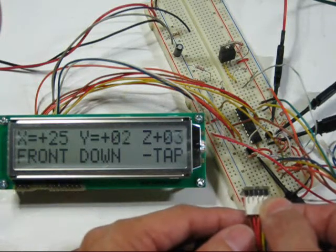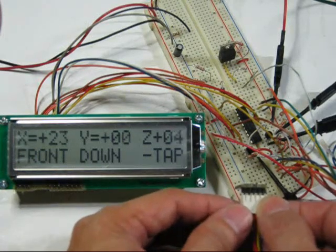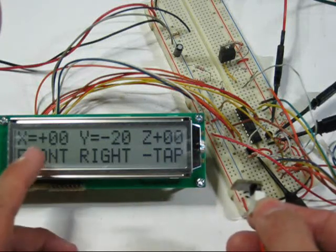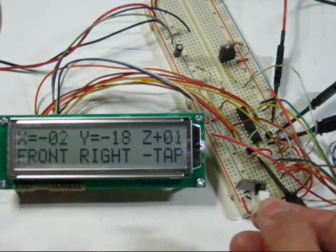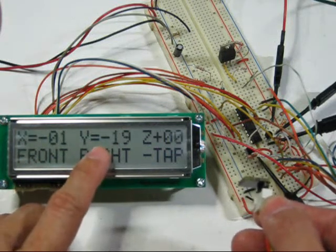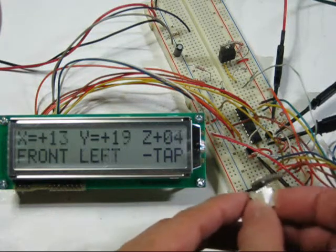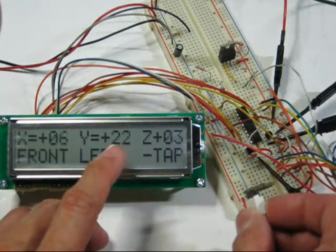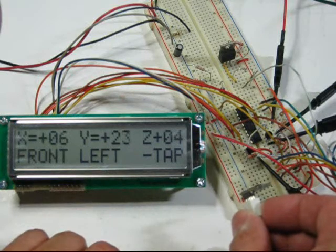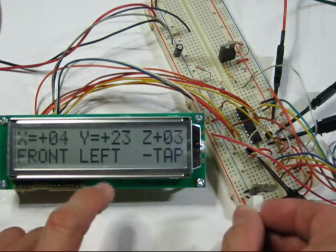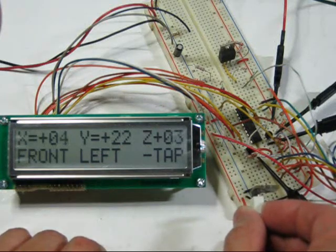And it says that's facing down. If I turn it one side, it says it's facing right, and as you can see, x and z are practically 0, while y is at negative 1g. Turn it the other way, 180 degrees, and now the y-axis is at 1g, positive 1g, while the orientation is facing left.